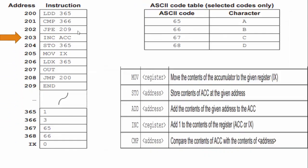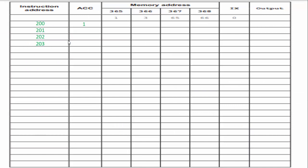We look at the next one: INC, increment — add one to the contents of the register, accumulator or index register. It tells me we want to do that to the accumulator, so I'm going to increment the accumulator. That is address 203. I do what it said, which was add one to the accumulator. My new accumulator value is now two.